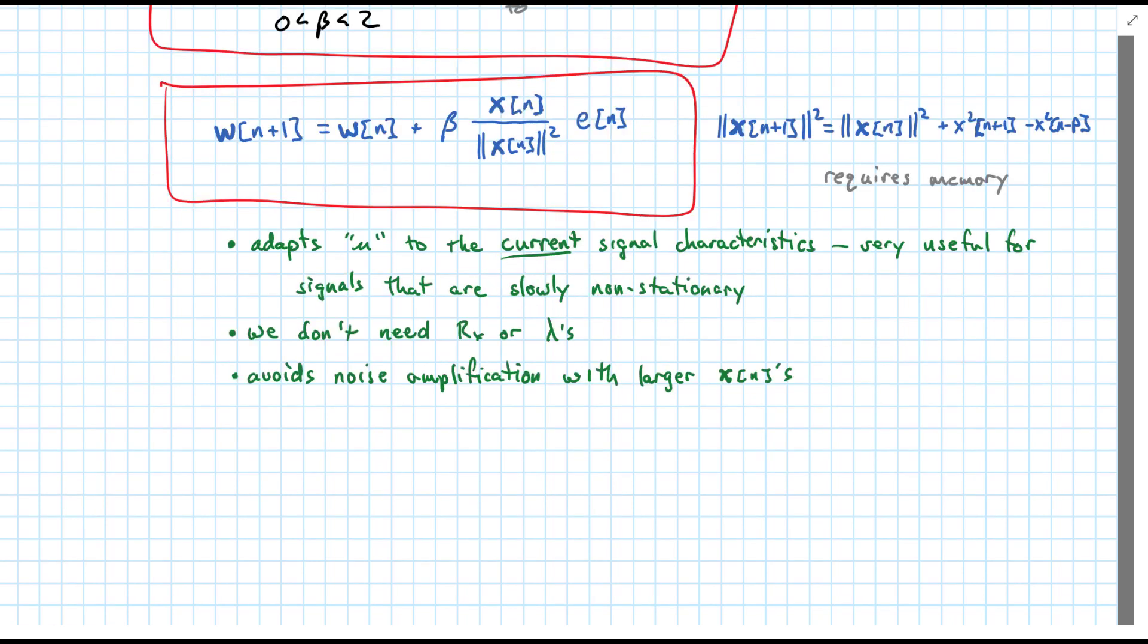Finally just a few more points. One is that the LMS algorithm, the NLMS algorithm, converges in the mean square if beta is less than 2. I like to choose something like 0.01 in extreme cases to one half when I want to be very aggressive with the adaptation of the filter.